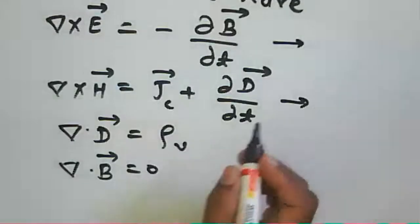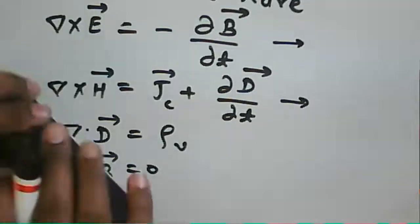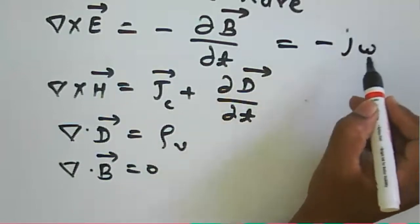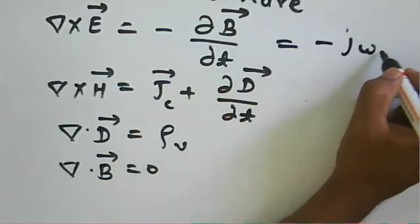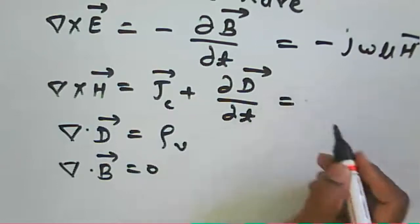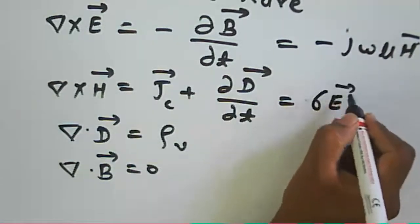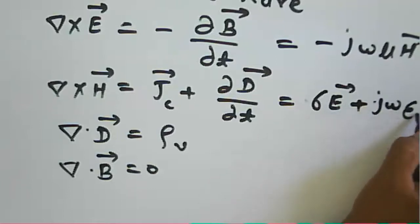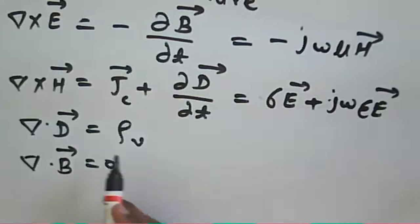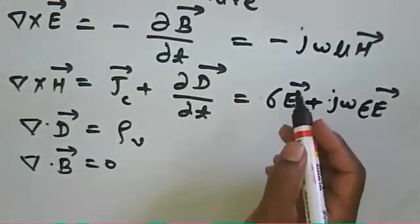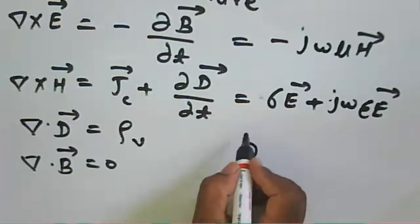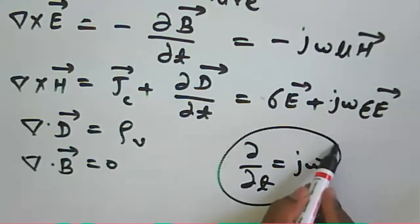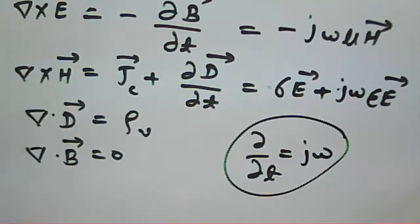In phasor form, our equations become: del cross H and del cross E equal to minus jωμ. We also have del cross H equal to sigma E plus jωεE. We replace the ∂/∂t term with jω — that is the phasor notation. From these Maxwell's equations we can obtain the wave equation.